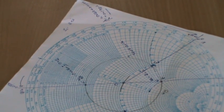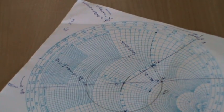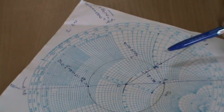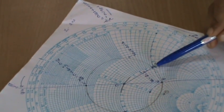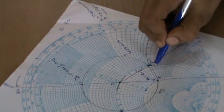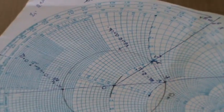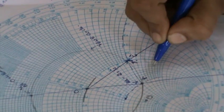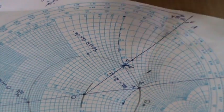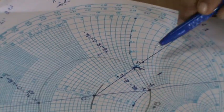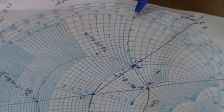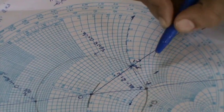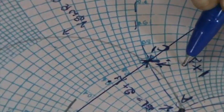Next what we need to obtain is l by lambda. What you need to do? Again come back to the C dash position. In the C dash you just check what is the actual impedance value. It cuts the unit circle, so R will be equals to 1 and the positive reactance where it cuts is at 1. So the value will be 1 plus j1.